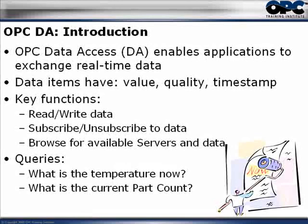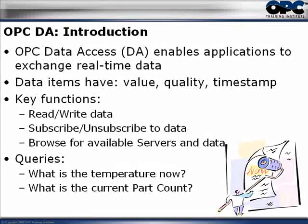An OPC client can ask many questions of an OPC server — for example: what is the latest temperature outside right now? What is the RPM of the feed water pump? How many cogs did we make today? These all boil down to one single question: what is the latest value you have? OPC DA is used for real-time values only; if you want a previous value, you must use the OPC Historical Data Access specification.